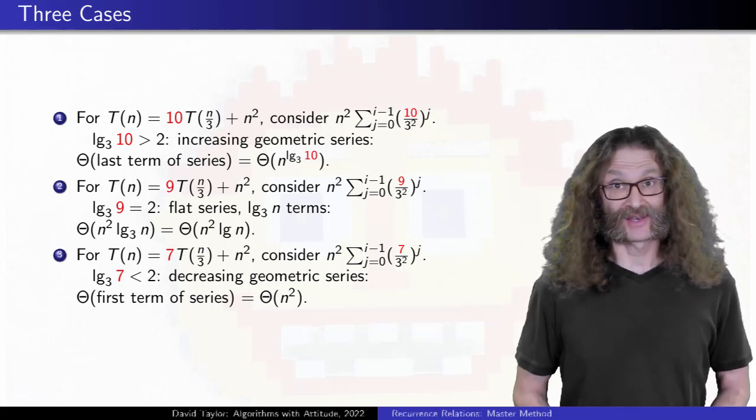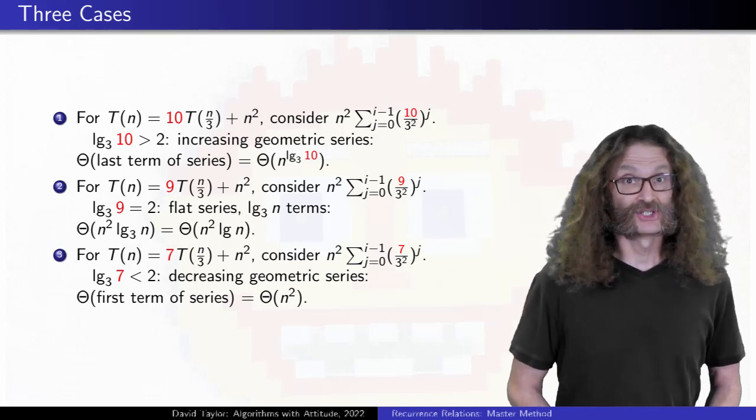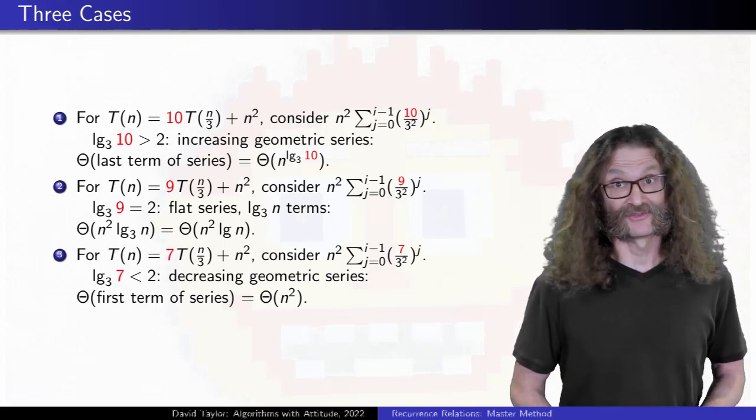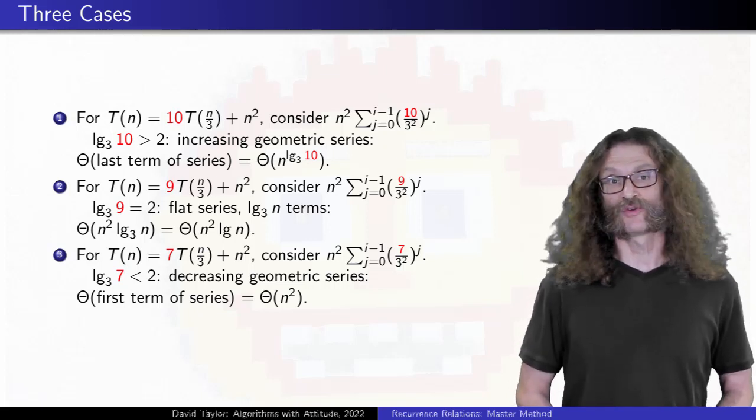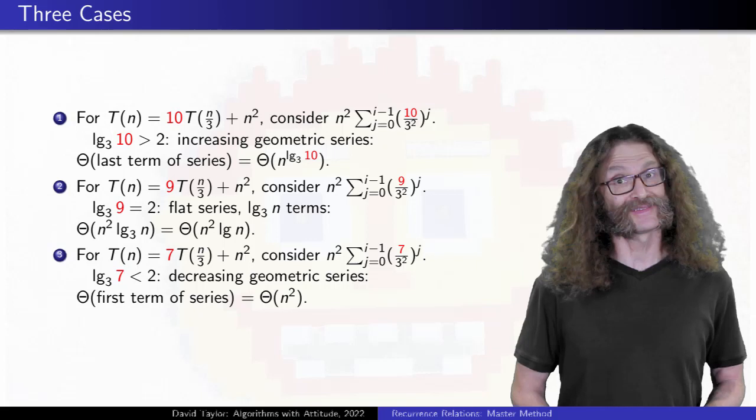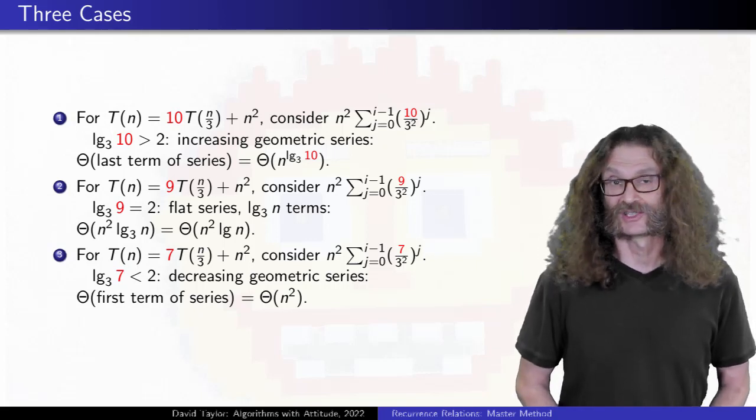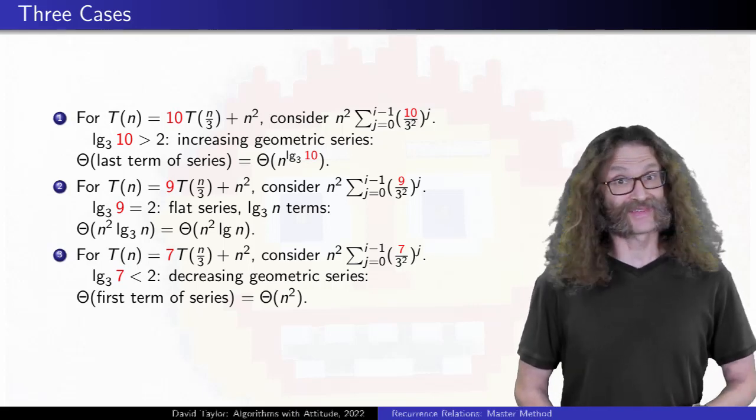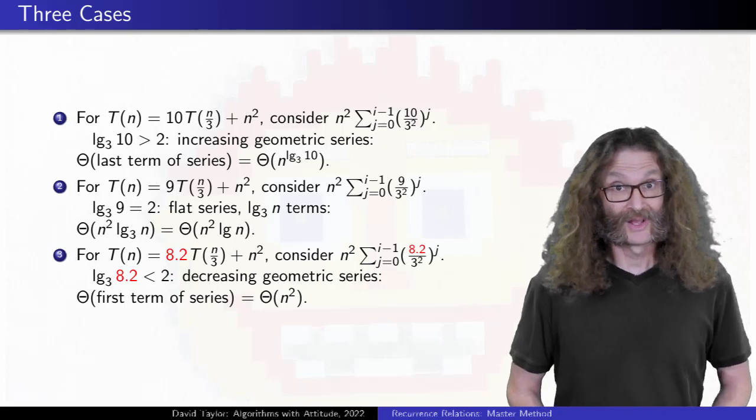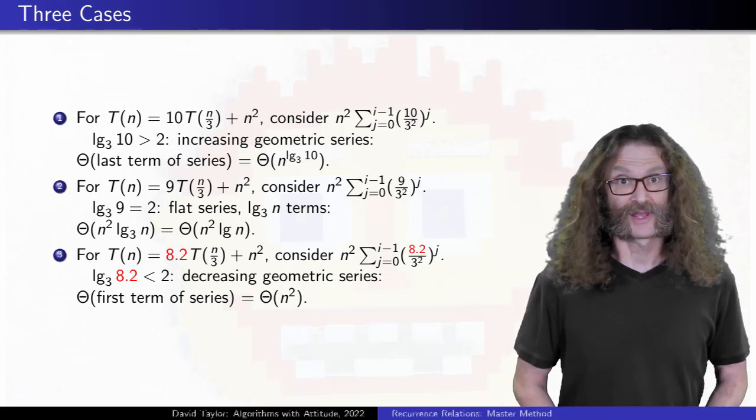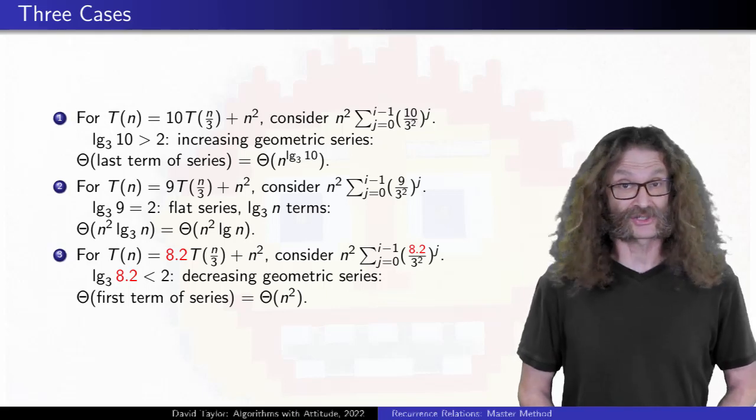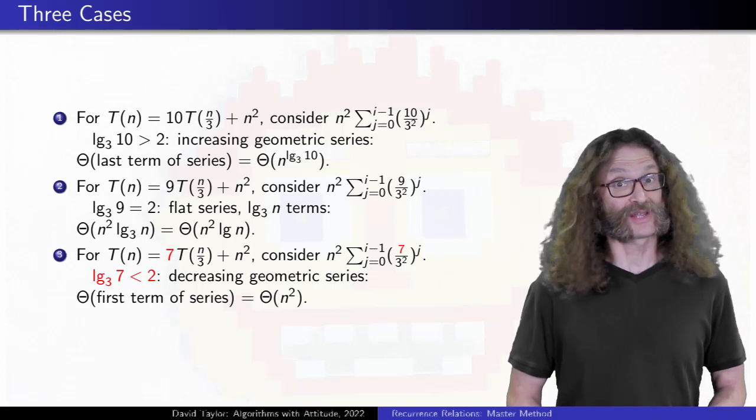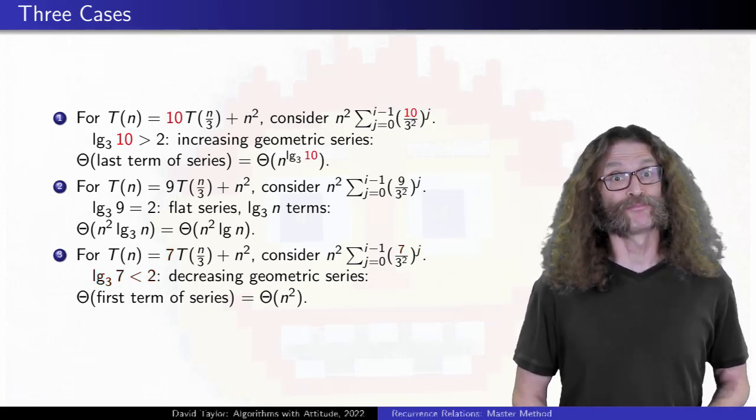Comparing log base 3 of 10 against 2, it is bigger, which led to an increasing geometric series. Comparing log base 3 of 9 against 2, they are equal, which led to a flat series. And log base 3 of 7 is less than 2, which led to a decreasing geometric series. Those are the three cases that we have. If I made that 7 into a 6, or a 5, or an 8.2, the analysis would still look just like the third case. There isn't anything particularly special about the 7 except that it is less than 9. And there isn't anything particularly special about 10 except that it is bigger than 9.